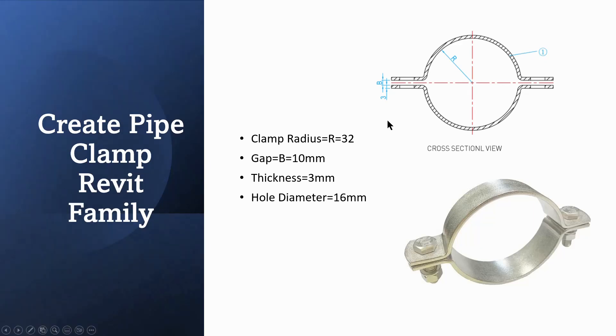Hello everyone. Today I would like to show you how to create a pipe clamp Revit family. In this tutorial, I will use and load in the created bolt, nut, and washer which are parameter controlled by lookup table. You can find and watch how to create bolt, nut, and washer in the channel. I will refer the data in the picture to create the parameters.